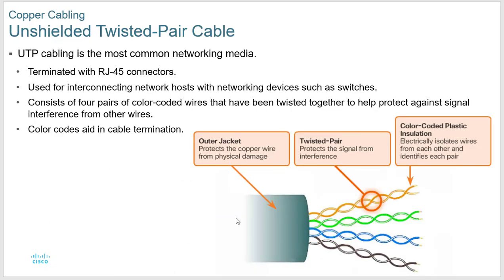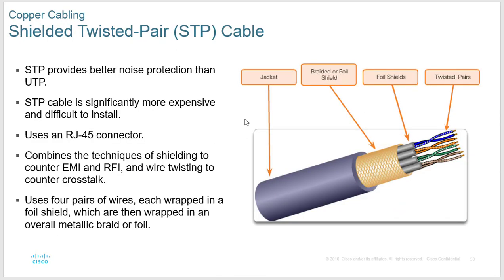Ethernet cable using twisted pair uses an RJ45 connector — that little clear plug that locks into the PC. RJ stands for registered jack. In a class setting we actually make cables, but I'll link a good cable-making video. Shielded twisted pair has shielding inside to stop RFI or EMI, but it still has eight wires in pairs.